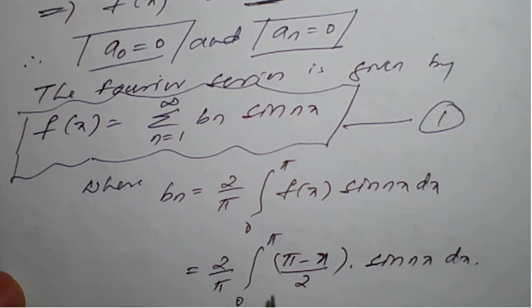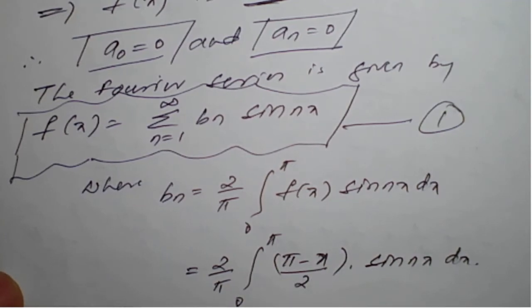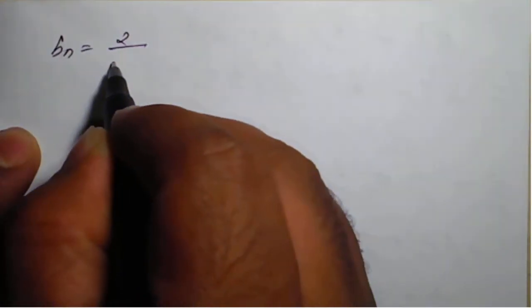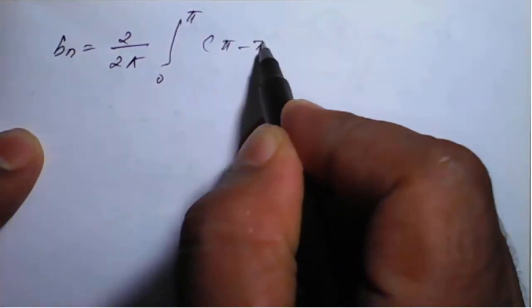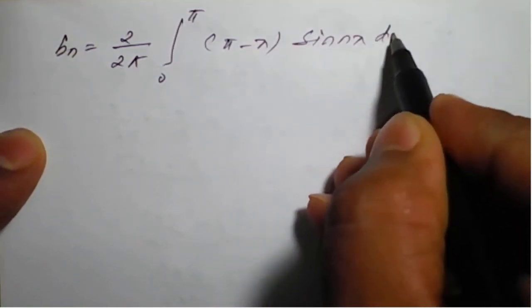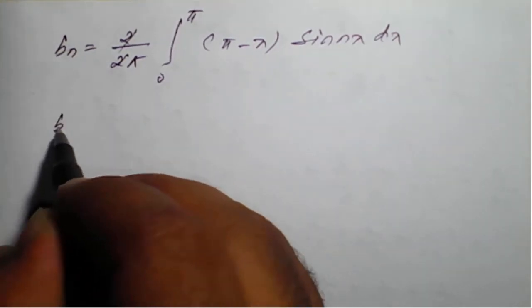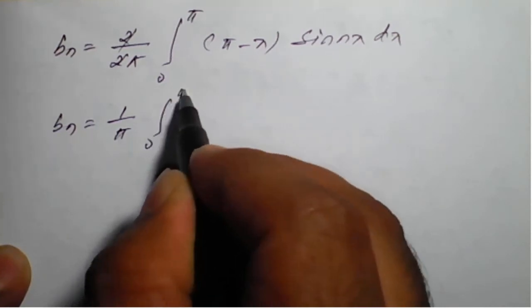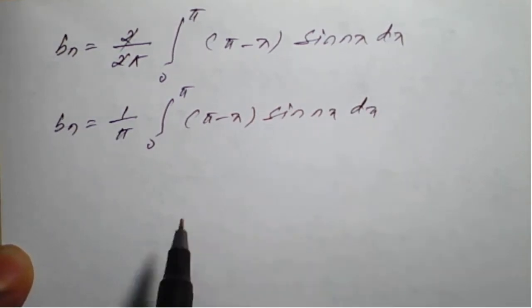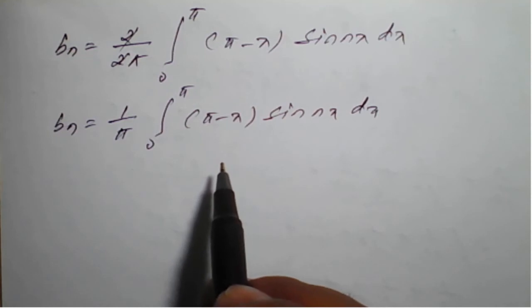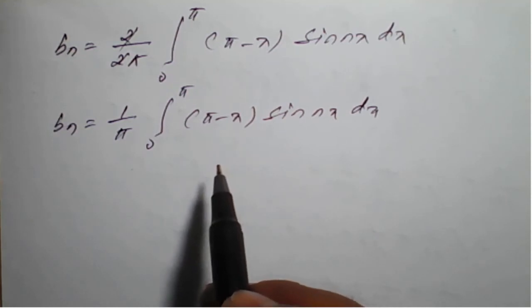Taking the constant 1/2 outside, the 2 in the numerator and 2 from (π - x)/2 cancel, giving bₙ = (1/π) ∫₀^π (π - x) sin(nx) dx. Here we need to apply Bernoulli's rule to evaluate this integral.